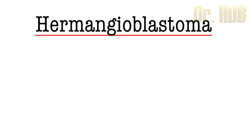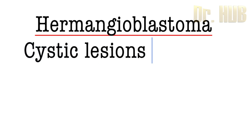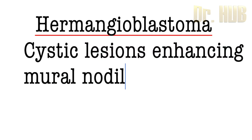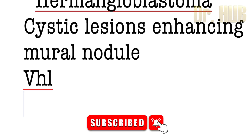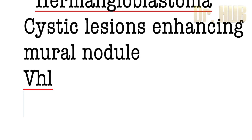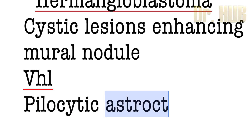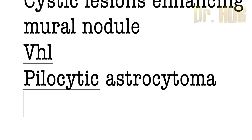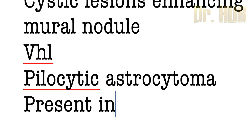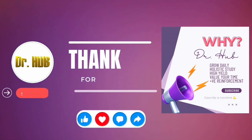Hemangioblastoma — it is nothing but a cystic lesion with an enhancing mural nodule. It is associated with VHL, Von Hippel-Lindau syndrome. The differential diagnosis is pilocytic astrocytoma. Hemangioblastoma is present in an adult.